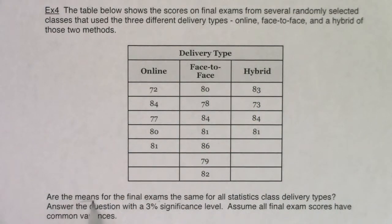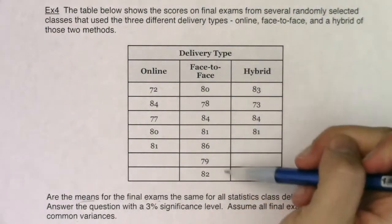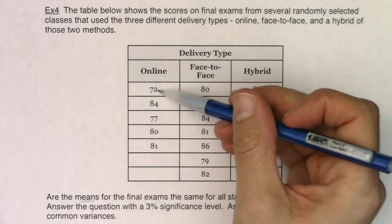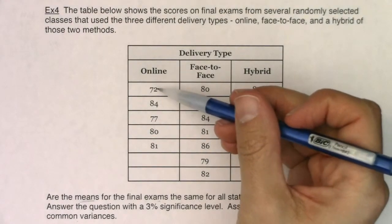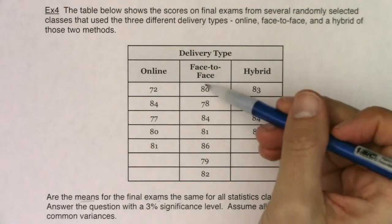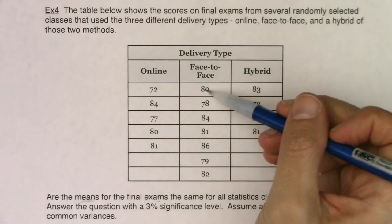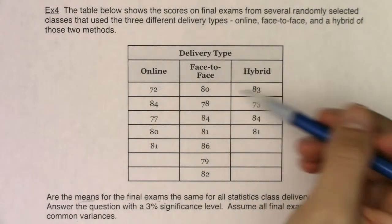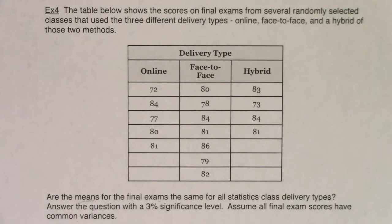Okay, are the means for the final exams the same for all statistics class delivery types? Answer the question with a 3% alpha level. Assume that all final exam scores have common variances. If I look at this, these numbers here, they are not frequencies, right? This is numerical data. This is somebody's score, a student's score on their final, and they took this online stats class.